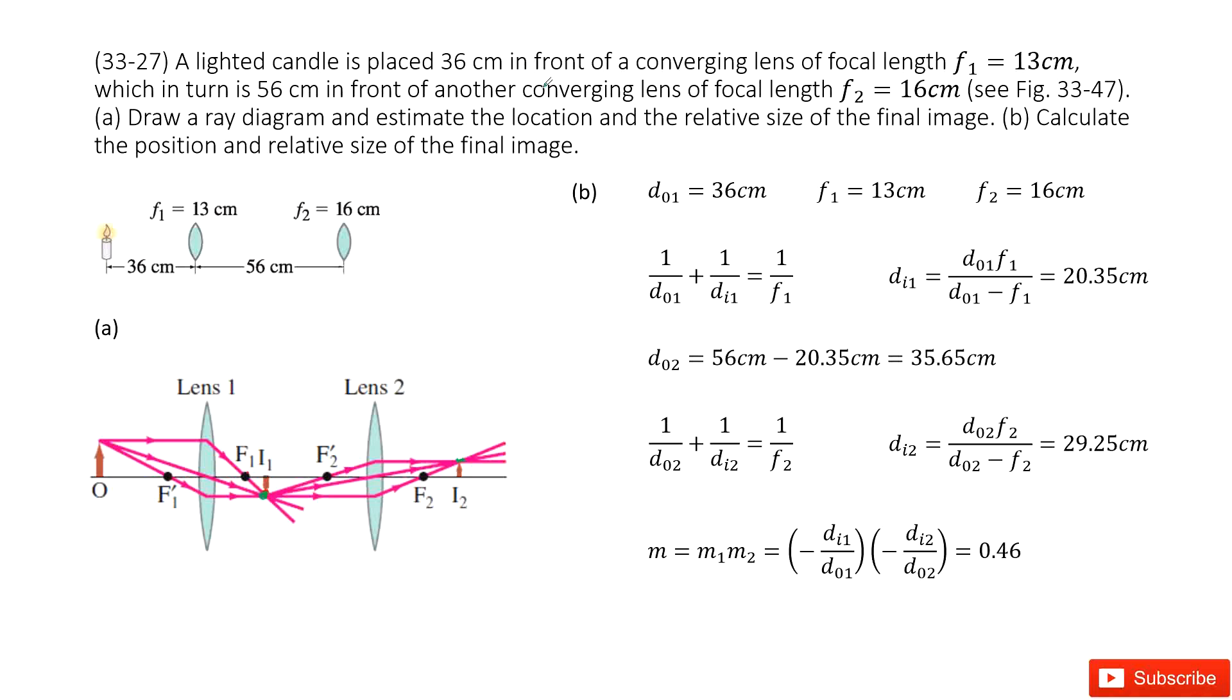Then we can do the calculation to find the location for this I2 and the magnification for this final image. So we list all the given quantities. First one is object distance for lens 1, 36 cm. F1 is given. F2 is given.